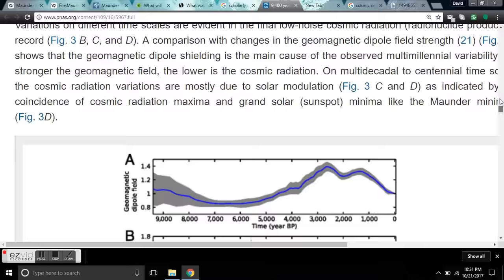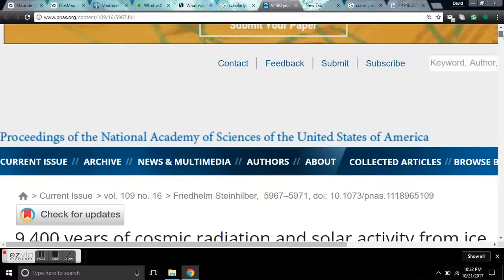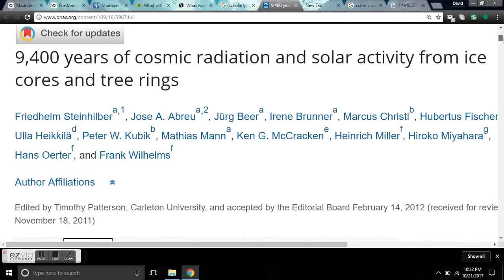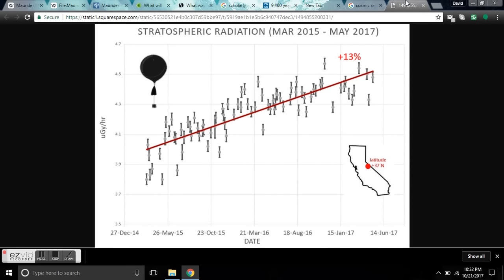Now, what you're looking at here is a paper called 9,400 Years of Cosmic Radiation and Solar Activity from Ice Cores and Tree Rings. Now, before we get into this, I want to describe to you what the purpose of this discussion is. What has been determined in the last decade is there's an amazing correlation between galactic cosmic ray flux increase on the surface of the planet during solar minimums. This is proven.